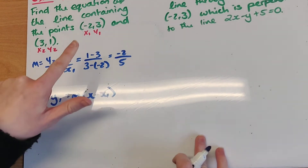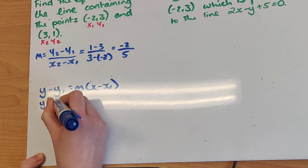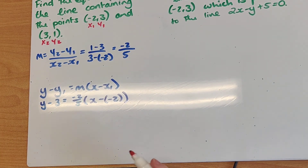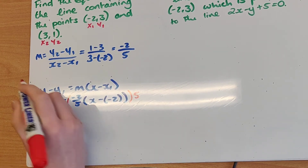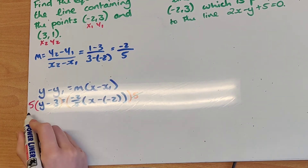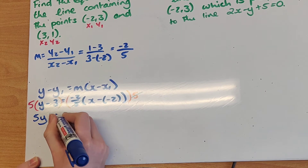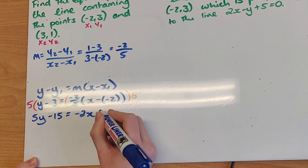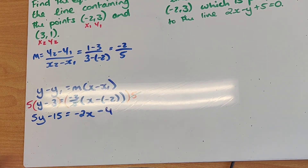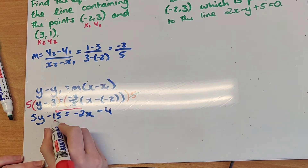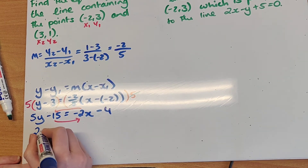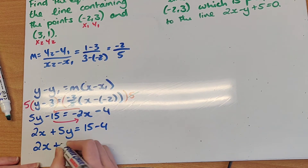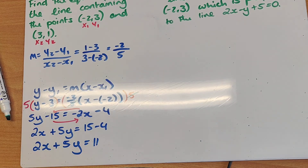Now using my slope and coordinates for x1, y1, I substitute into the equation of a line: y minus 3 equals minus 2 over 5 by x minus minus 2. I don't like fractions, so I multiply both sides by 5. The 5s cancel, giving 5y minus 15 equals minus 2x plus minus 4. Minus by minus is plus, so minus 2 by plus 2 is minus 4. Bringing the 2x over and the 15 across: minus 2x becomes plus 2x, and minus 15 becomes plus 15, minus 4. So my final answer is 2x plus 5y equals 11. That is now my equation of a line.